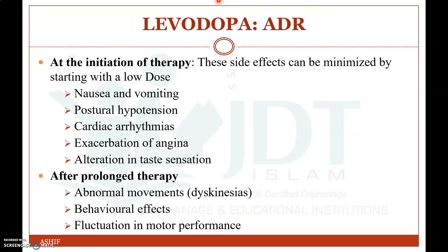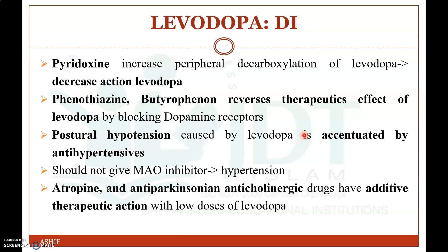The adverse drug reactions of levodopa at initiation of therapy can be minimized by starting with a low dose. These include nausea and vomiting, postural hypotension, cardiac arrhythmia, exacerbation of angina, and alteration in taste sensation. After prolonged therapy, adverse reactions include abnormal movements or dyskinesia, behavioral effects, and fluctuation in motor performance.